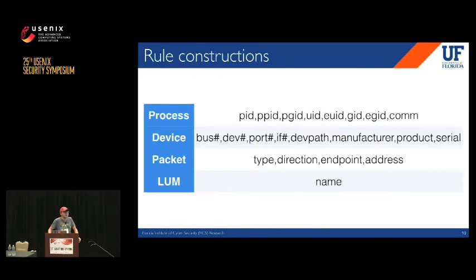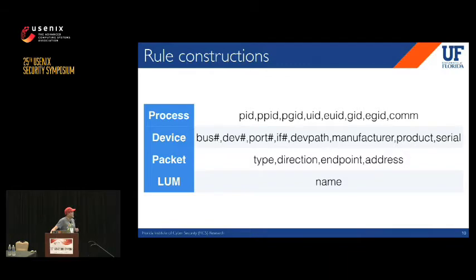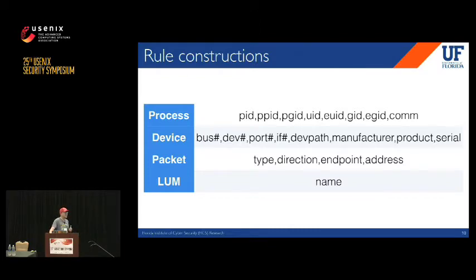We have 21 rule constructions divided into four tables. The process table has information about user space processes: PID, PPID, UID, and command line. The device table has device information like manufacturer, product, serial number, and physical connection info such as bus and port number. The packet table has packet properties: whether it's a keyboard or storage packet, its direction (in or out), and which endpoint handles it. The fourth table is LUM — Linux USB Filter Module — which we'll discuss shortly.